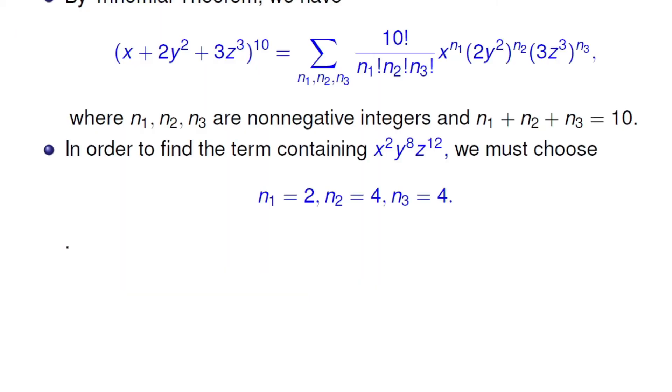Now in order to find the term containing x squared, y raised to power 8, and z raised to power 12. Now we must choose n1 being 2, n2 is 4, and n3 is 4.